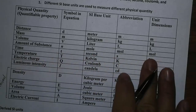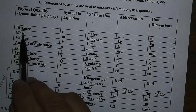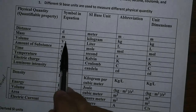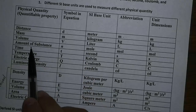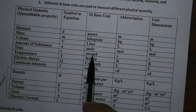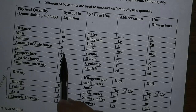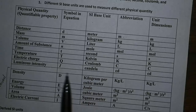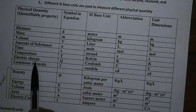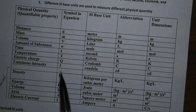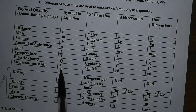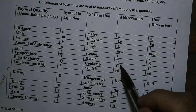Kilogram is used to measure mass, represented by the letter M. Liter is used to measure volume, represented by V. Mole is used to measure the amount of substance, represented by italic lowercase N. Second is used to measure time, represented by lowercase T. Kelvin is used to measure temperature, represented by capitalized T. Coulomb is used to measure electric charge, represented by uppercase Q. And candela is used to measure luminous intensity, represented by capitalized italic I. Each also has its own abbreviation.